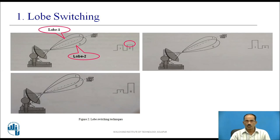When the object to be tracked is on the axis, the echo amplitudes for the two positions of the beam are equal and the difference between amplitude 1 and amplitude 2 is zero. When the object is on one side of the antenna axis, the amplitude and the sense of the difference signal tells how much and on what side of the antenna axis the object is located. The difference signal is then used to generate a correction signal with the help of servo control, and the loop drives the antenna to bring the object onto the antenna axis.